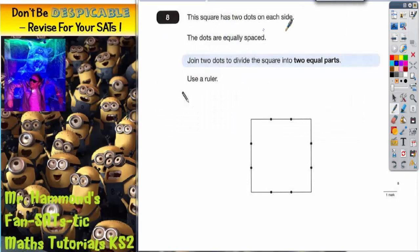Question 8 says this square has two dots on each side. The dots are equally spaced. What we've got to do is join two dots to divide the square into two equal parts. Use a ruler.